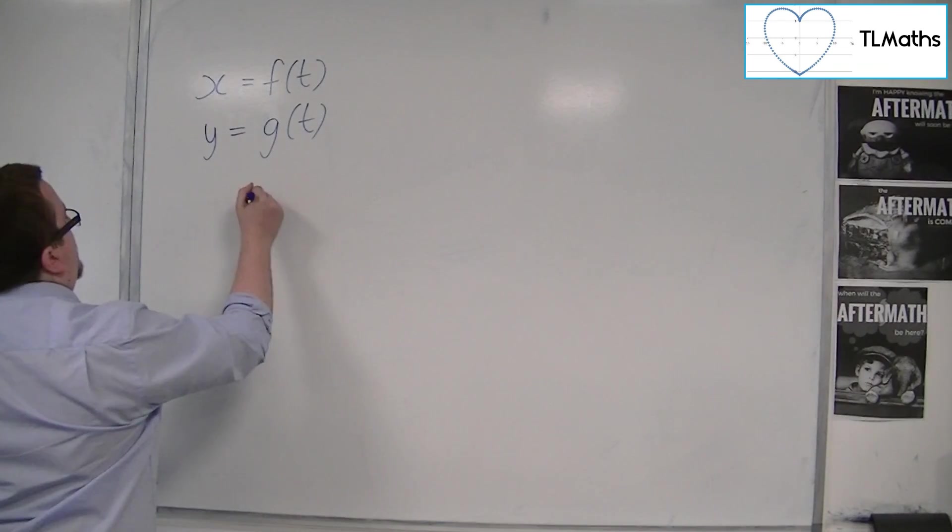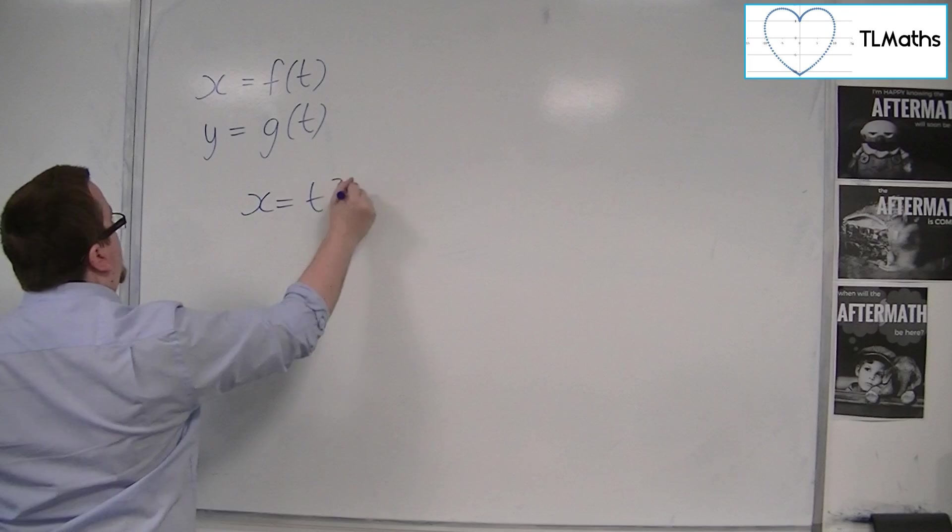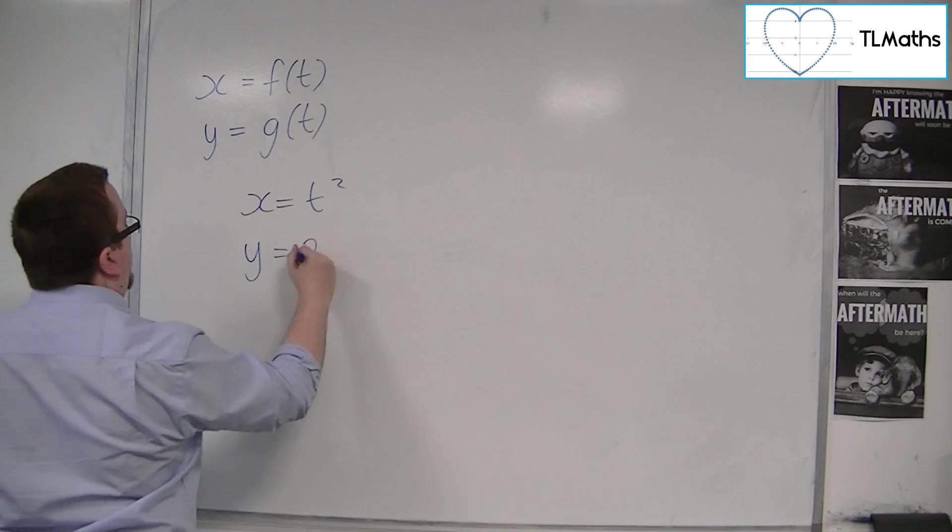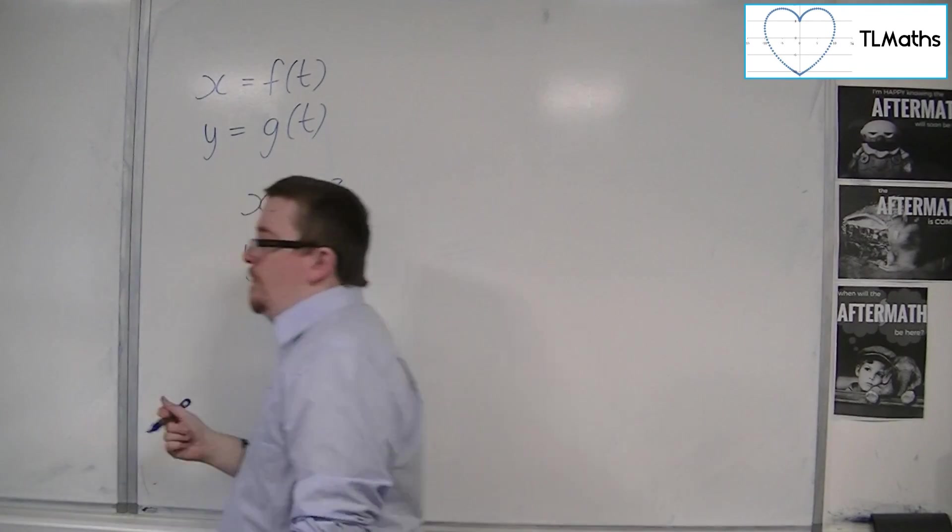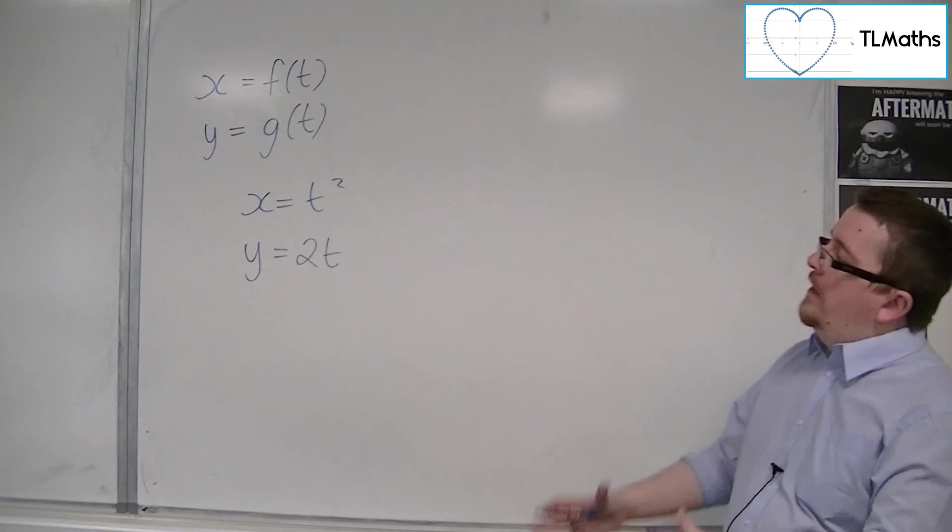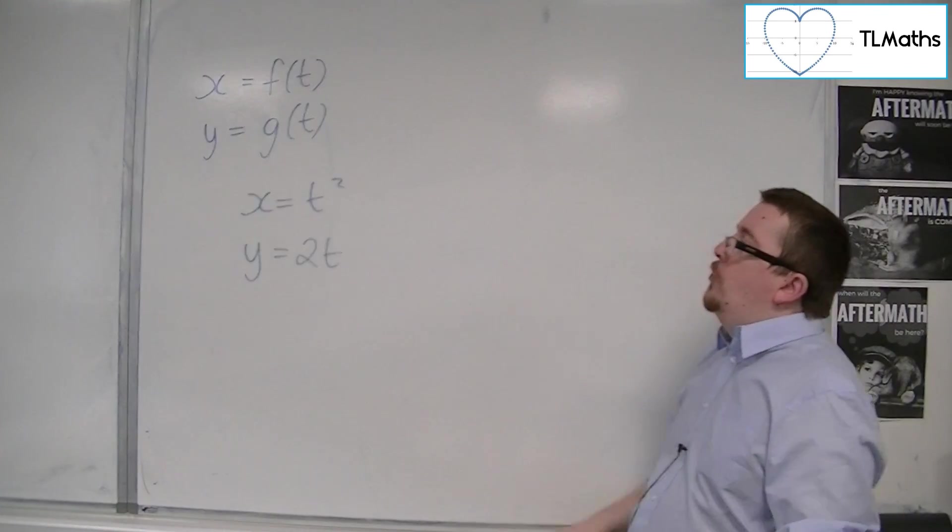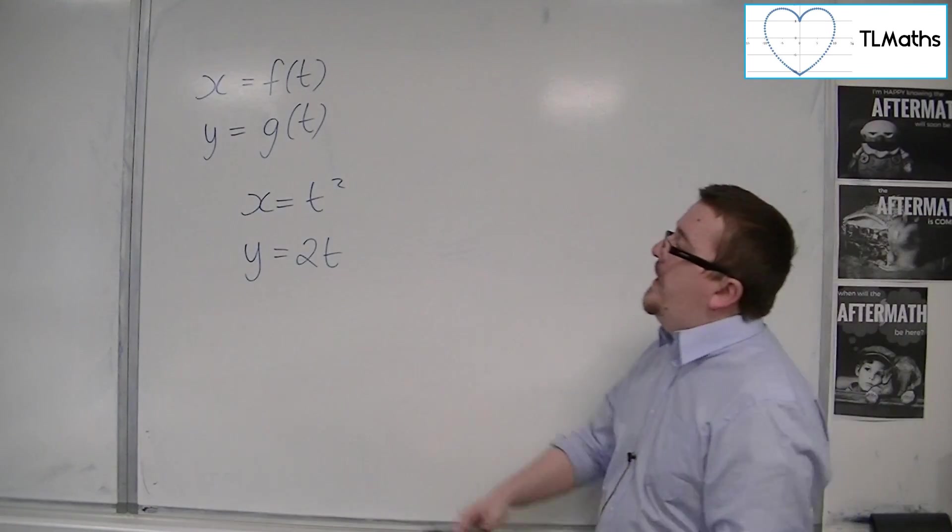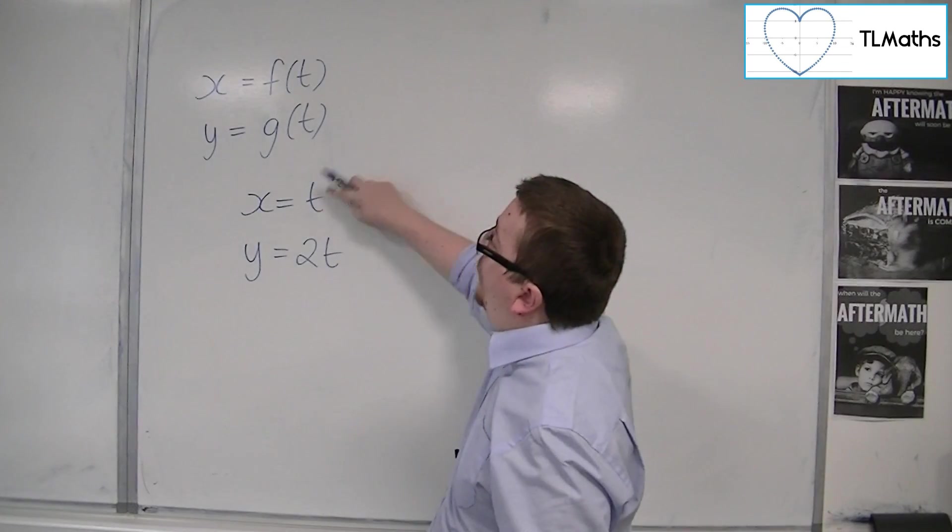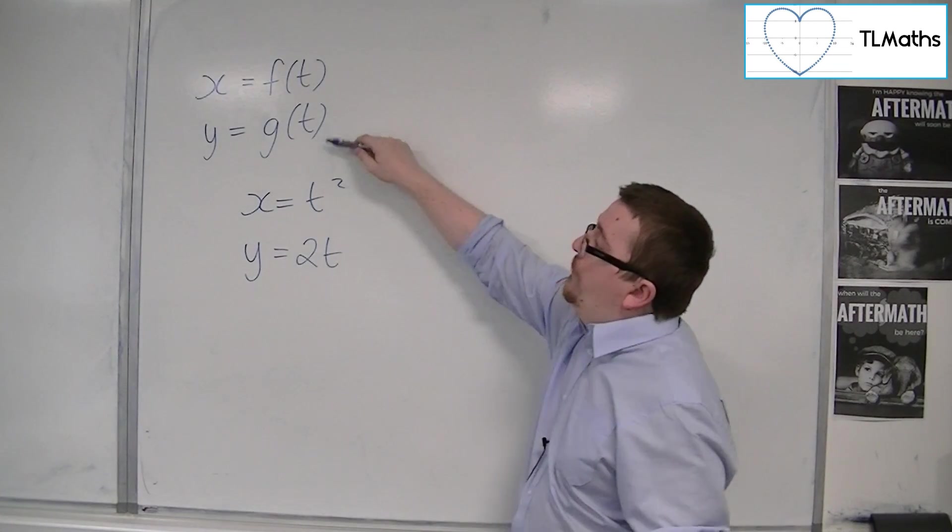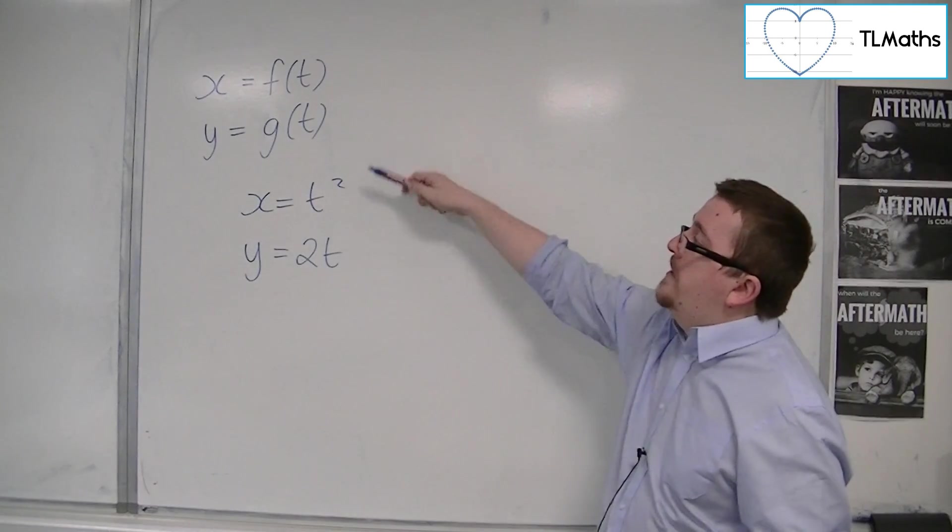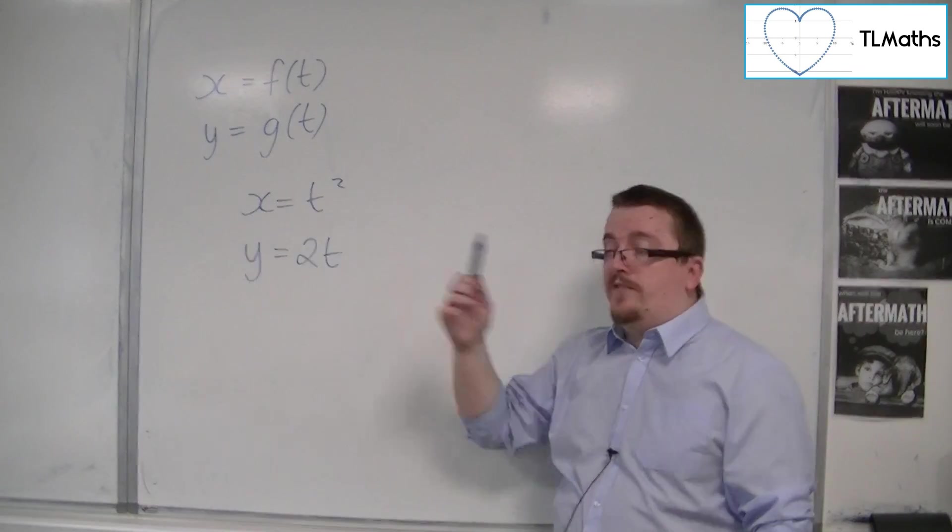So let's say that x is equal to t squared, and y is equal to 2t. We'll keep the functions pretty straightforward, but what you can see is that x is given as a function of t, so that's your f of t, and y is given as a function of t as well, but it's a different function, so this could be g of t.